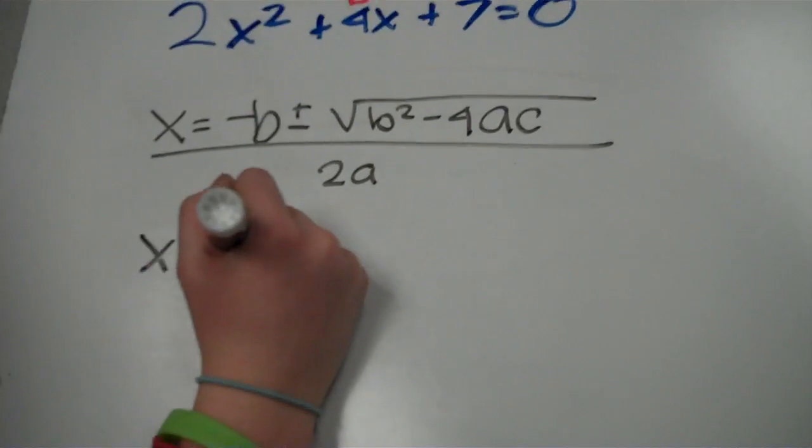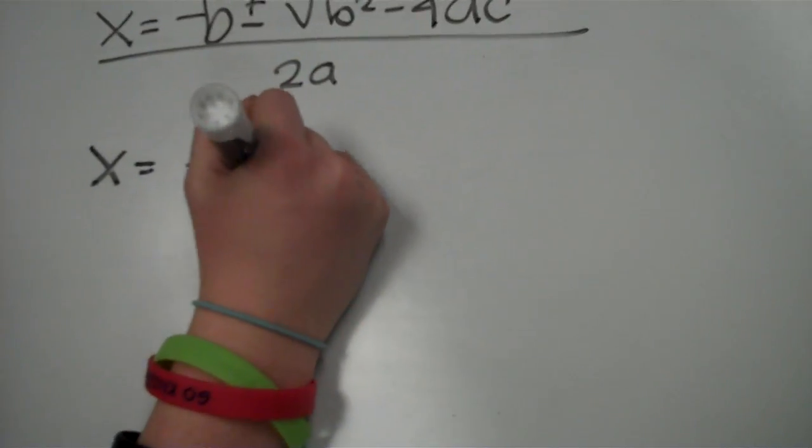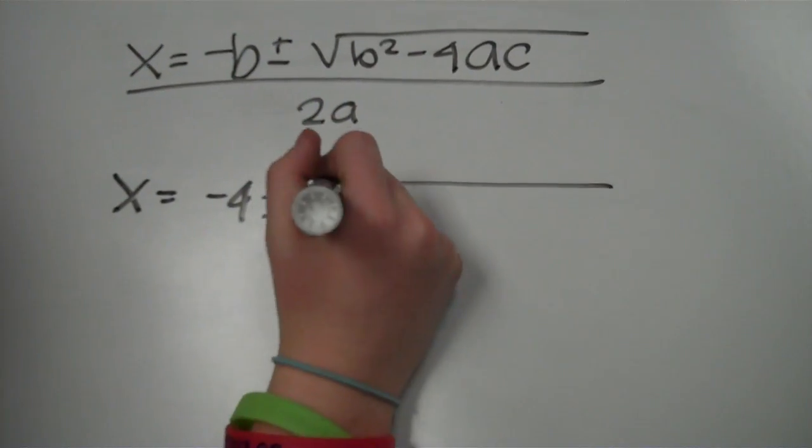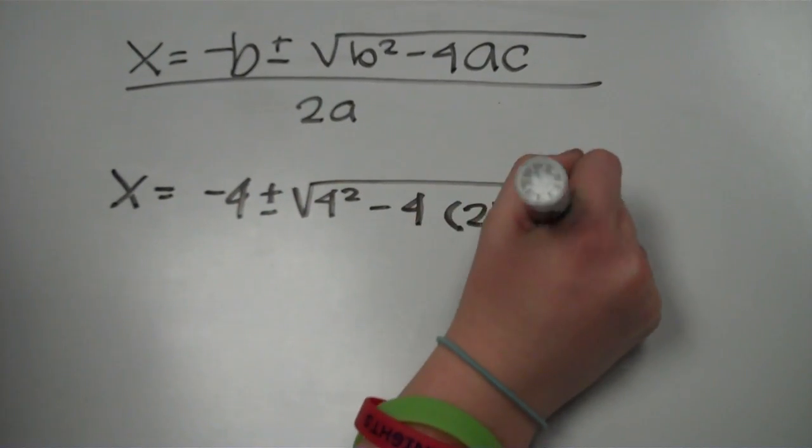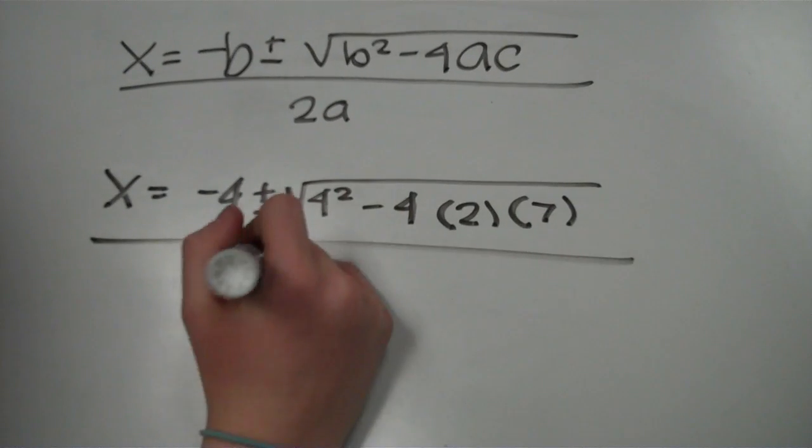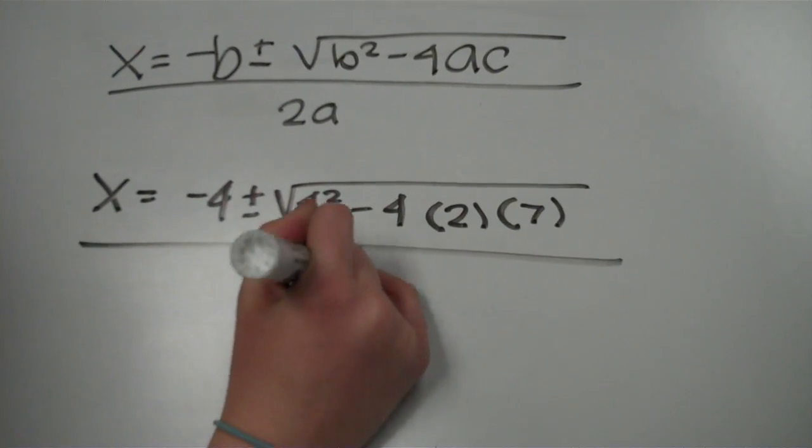so it would be x equals negative 4 plus or minus square root 4 squared minus 4, 2 times 7 all over 2, 2.